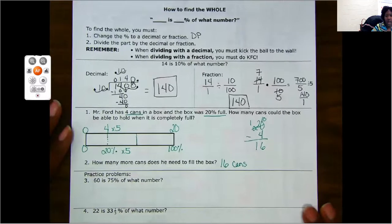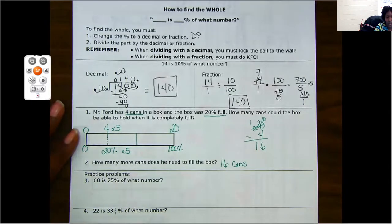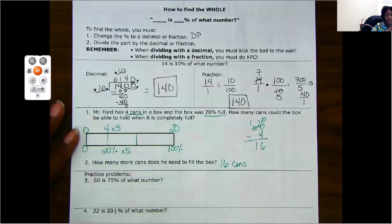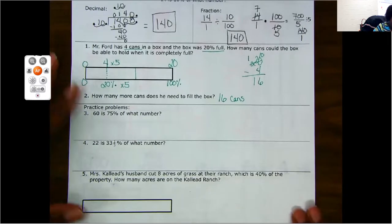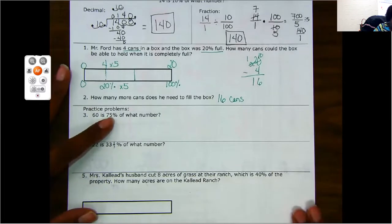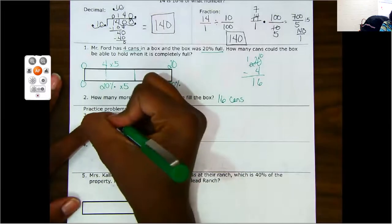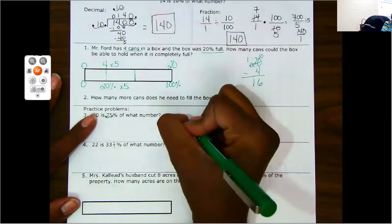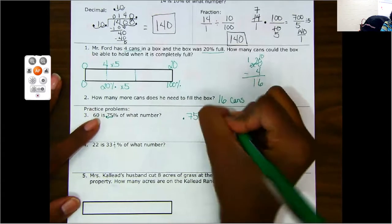Okay. So I've just shown you three different ways to find the whole or the total. I'm assuming that most of you will probably like the decimal way. So I'm going to continue with the decimal. Let's go to the next one. 60 is 75% of what number? So here's my percent. I need to change it to a decimal. Dr. Pepper, one, two.